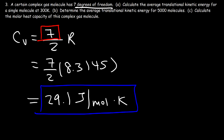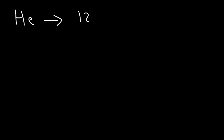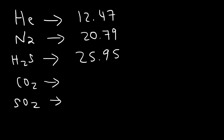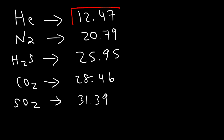The more complex a molecule becomes, the higher its molar heat capacity. For a monoatomic gas like helium it's 12.47 J/mol·K; for a diatomic molecule like N₂ it's 20.79 J/mol·K. For a molecule with 3 atoms like H₂S it's even higher at 25.95, and for other triatomic molecules: CO₂ is 28.46 and SO₂ is 31.39. Monoatomic gases have the lowest molar heat capacity, and molecules with 3 atoms have a much higher value.